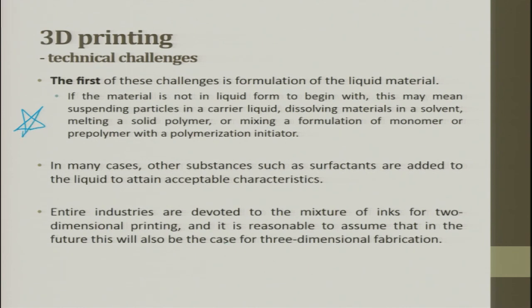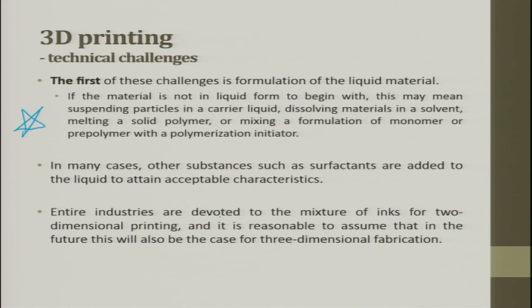So the binder becomes a big challenge if the material is not in liquid form. In many cases, other substances such as surfactants are added to the liquid to attain acceptable characteristics. When you have a surfactant, liquid metal, and building material, all three will have different wetting properties and different temperatures required for adhering. This makes the process require a multi-physics approach. Entire industries are devoted to the mixing of ink for two-dimensional printing, and it is reasonable to assume this will also be the case for three-dimensional fabrication.